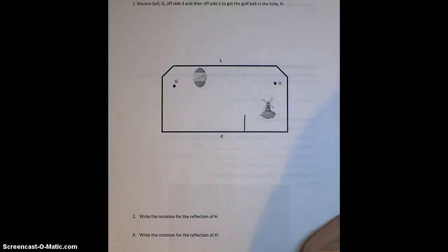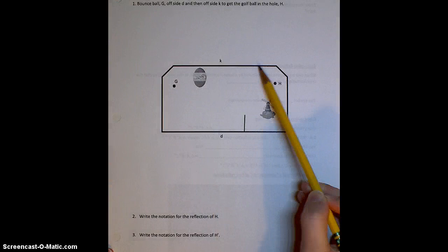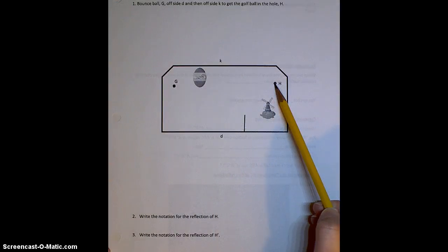Hello everyone, today we're going to review how to use reflections to do mini golf problems. So let's say I have this mini golf course here and I want to bounce the golf ball G off side D, then side K, and into the hole for a hole in one.